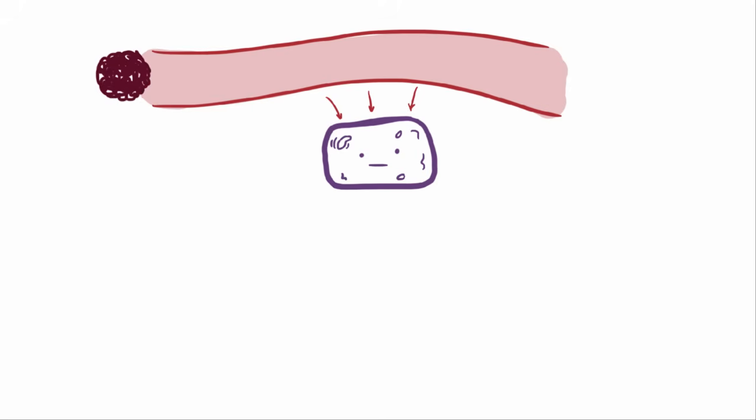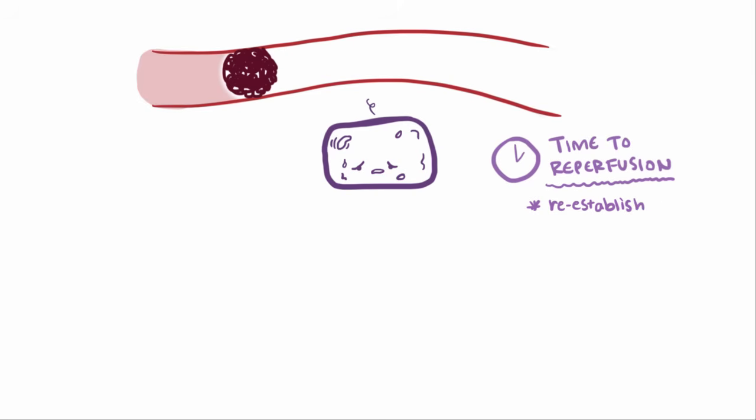If blood flow to an organ is blocked all of a sudden, a super important concept is called time to reperfusion. This refers to the importance of re-establishing perfusion to the affected organ before the cells die and the ischemia becomes irreversible.